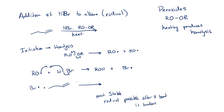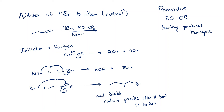Our pi bond connects a primary carbon to a secondary carbon. We look at this and ask: where do we want the radical to go? The secondary carbon is going to be the more stable position. So the radical comes in, we use one of these electrons to add to that radical, and the other electron goes to the secondary position. We make a secondary radical and put the bromine on the primary position.